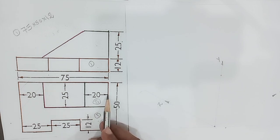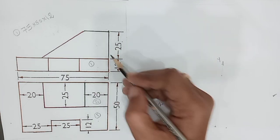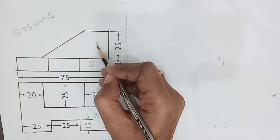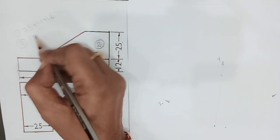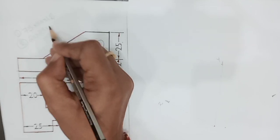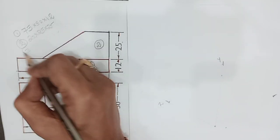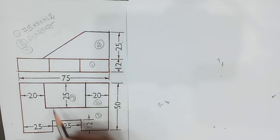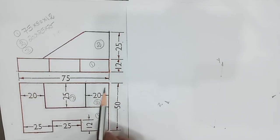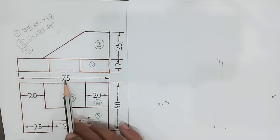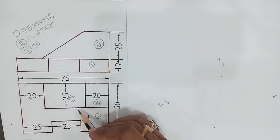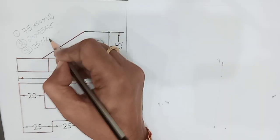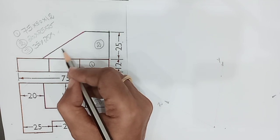The measurements of the first part are: total length 75, breadth 50, and height 12. The second part has length 20, breadth 25, and height 25. For the third part, the length is total length 75 minus 20 minus 20, that is 75 minus 40, which equals 35. The breadth is 25.